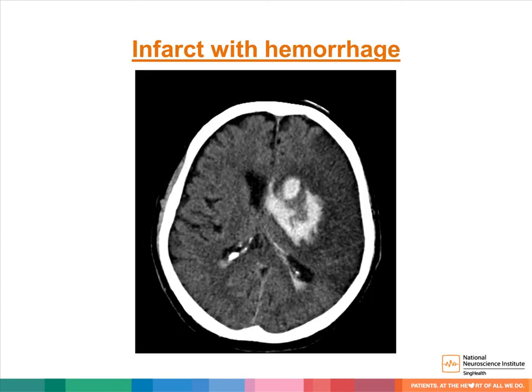An ischemic stroke can sometimes turn hemorrhagic. In this example, there is hemorrhagic conversion of the left MCA infarct.